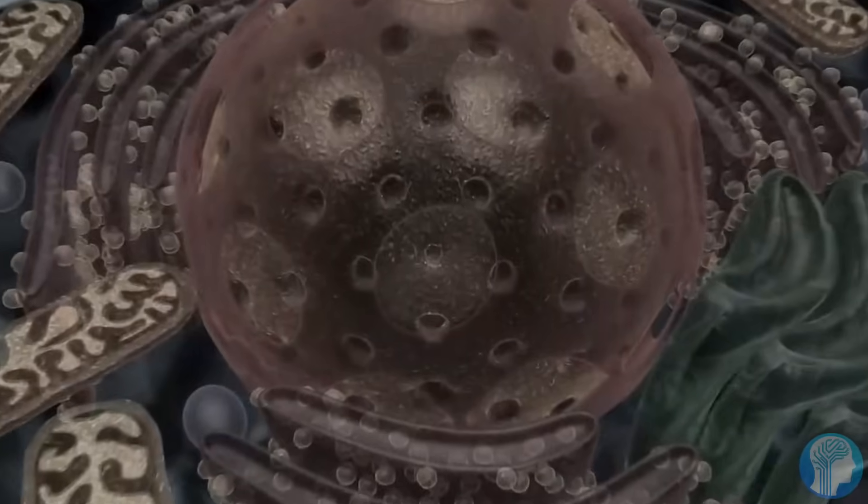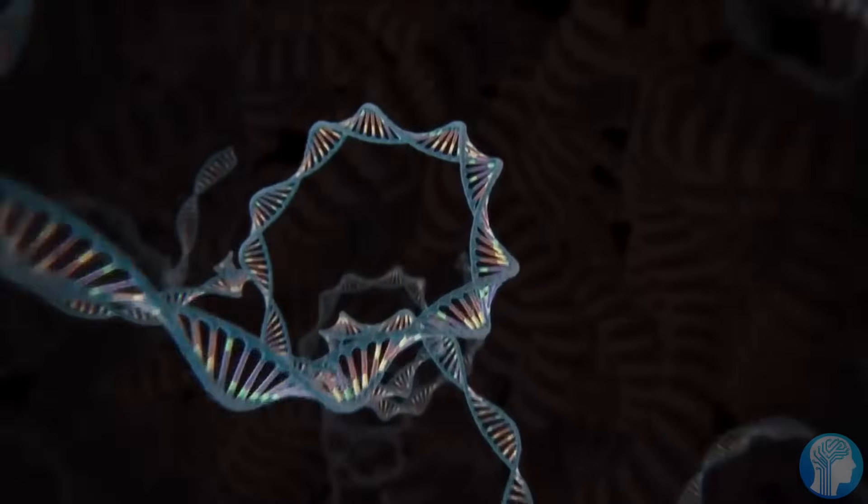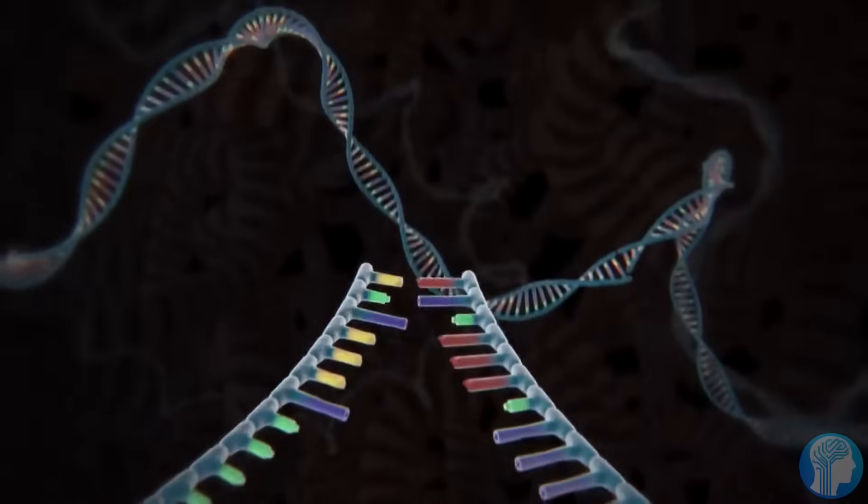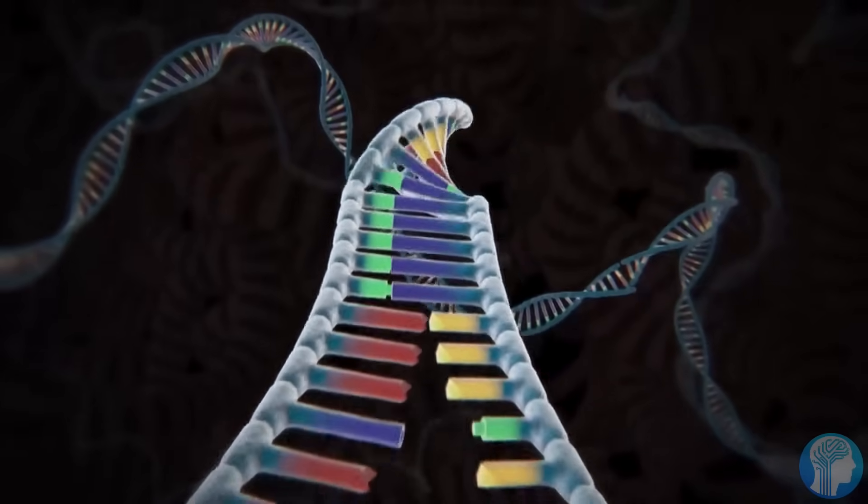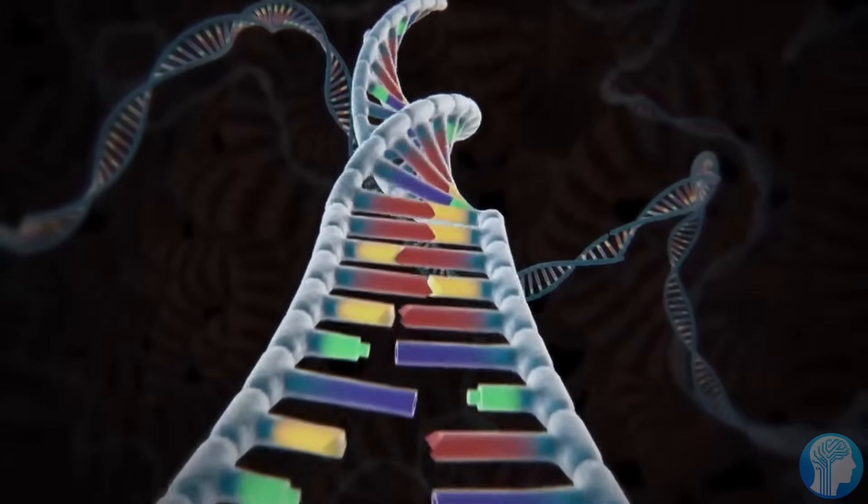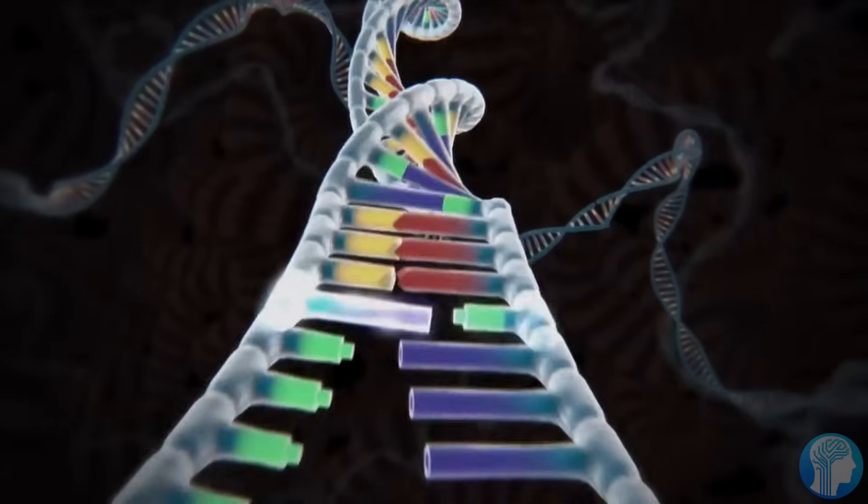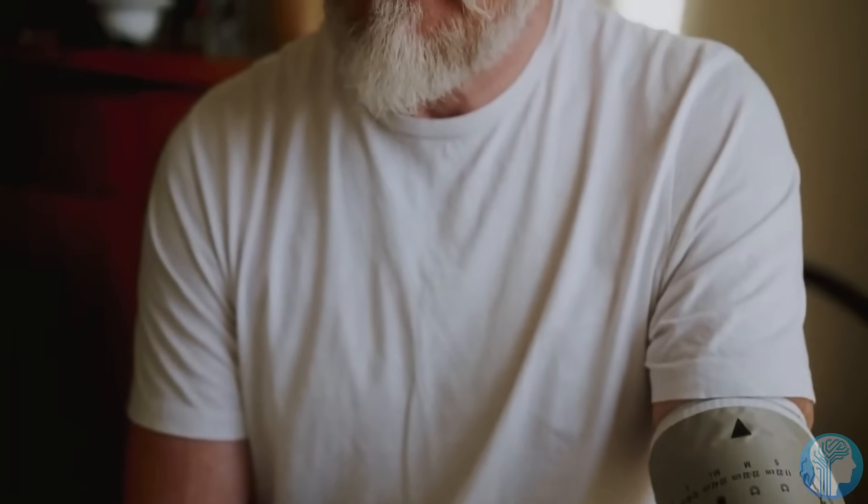Think of our cells as bustling cities, with organelles like mitochondria and lysosomes serving as essential infrastructure. Just as cities thrive when their infrastructure is well-maintained, our cells flourish when these tiny components are in optimal condition. However, when they falter, aging and disease can ensue.